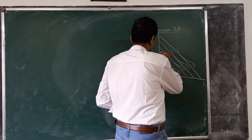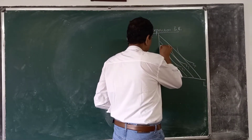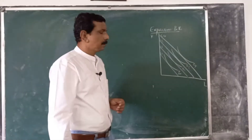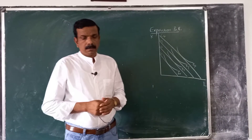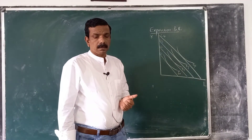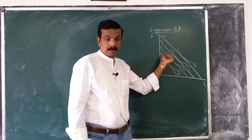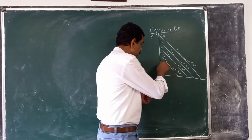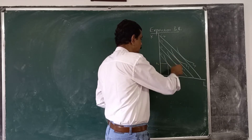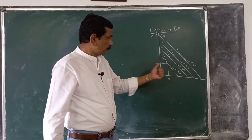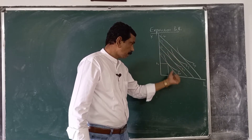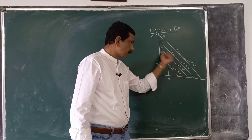The tangency between isocost lines and isoquants gives us the lowest possible cost of producing each particular level of output. For producing q1, the lowest cost is c1 using inputs l1, k1. Similarly, for producing q2, the minimum cost is c2 using l2, k2; for q3 it is c3, and so on.